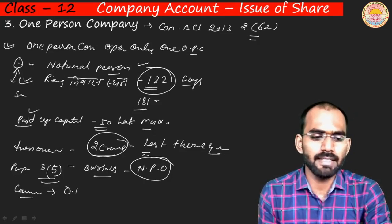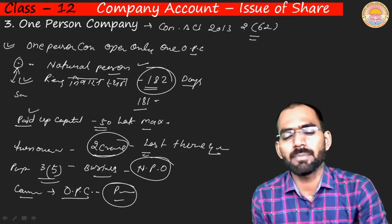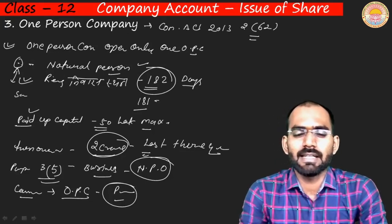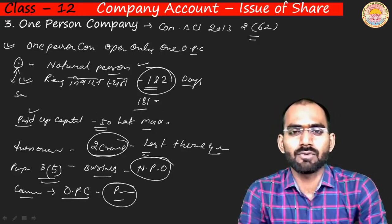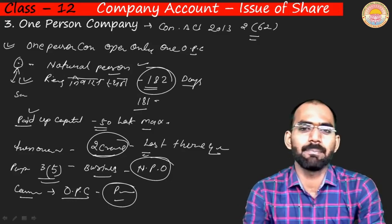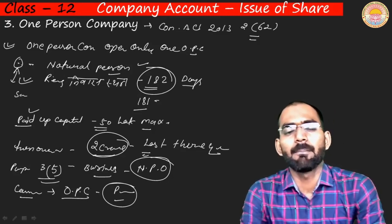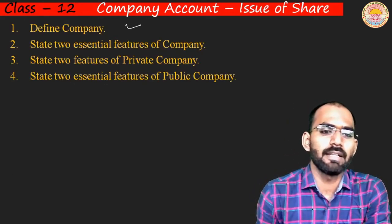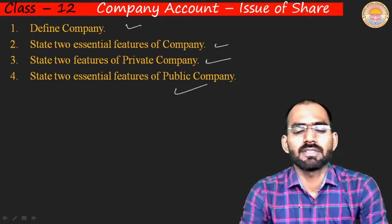Conversion: if an OPC's turnover exceeds ₹2 crore or other conditions are met, it must convert into a private or public company. Students, you need to define the company, two essential features of a private company, and the features of a public company.